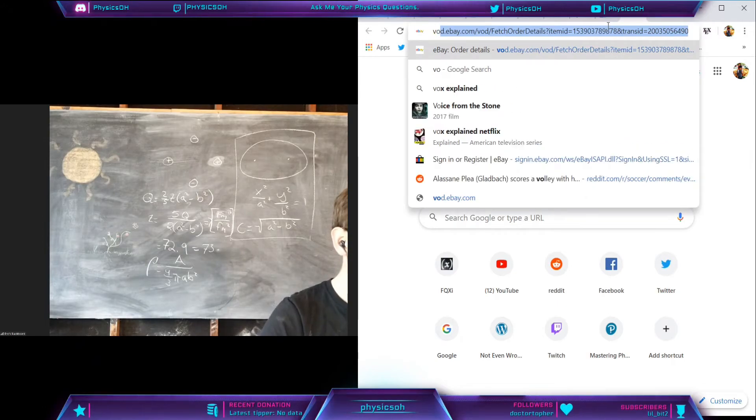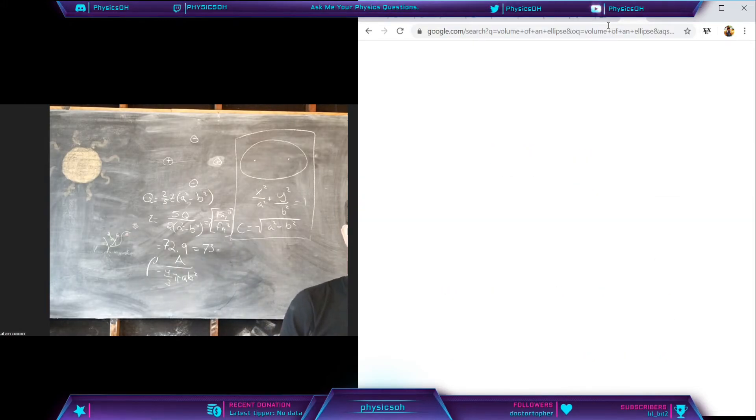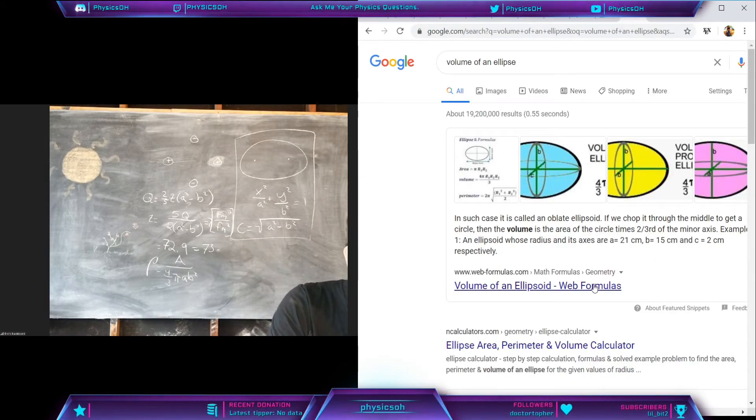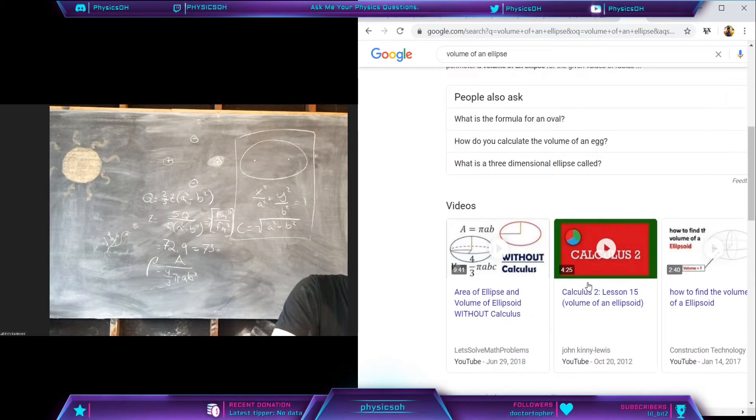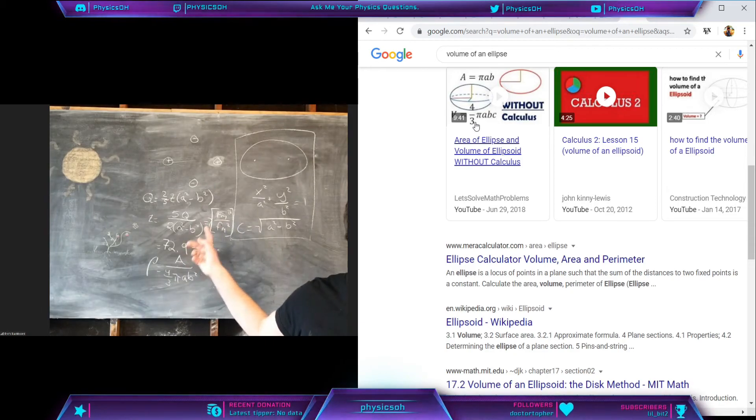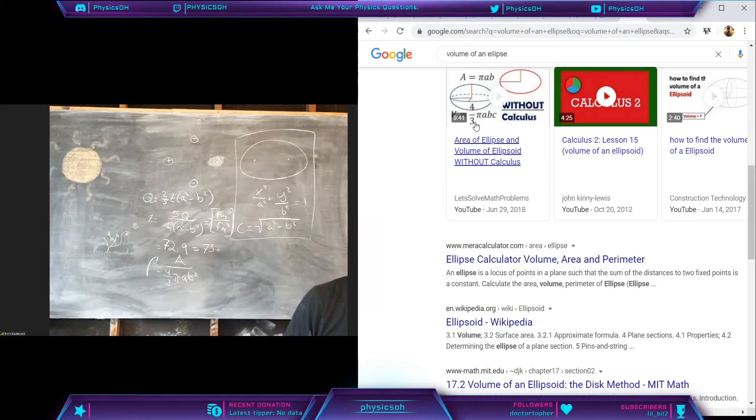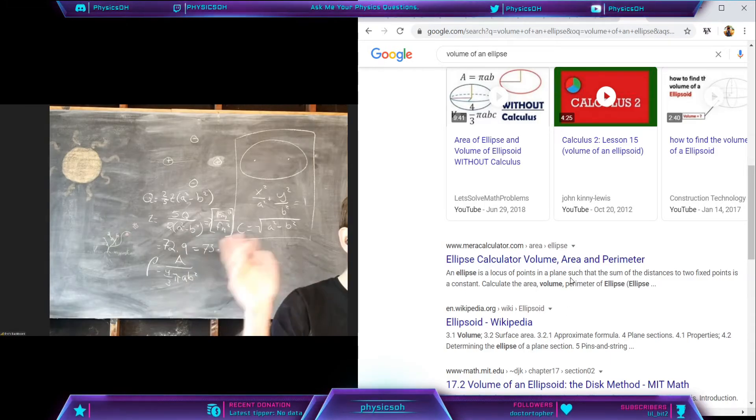Volume of an ellipse. What's an ellipsoid? Yeah, four thirds pi ABC. Remember when I said if you have a nice ellipse like this, the Z is gonna be another b squared, so it's A B B. That would be for an ellipse when A, B, and C are different, but our B's are gonna be the same.